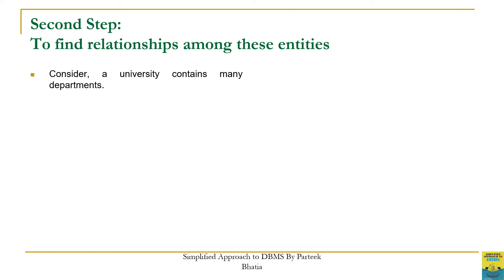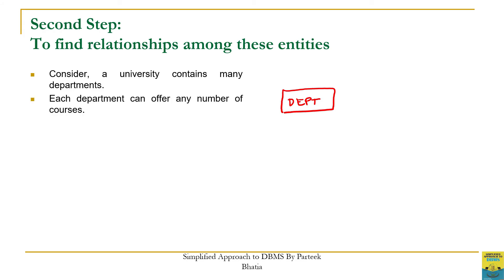Let us read the first line: 'A university contains many departments.' University has only one instance so we ignore it; the first entity is department, represented by a rectangle. The second line: 'Each department can offer any number of courses' — here we have nouns department and course, so we create another rectangle for course. The word 'offer' is a verb indicating a relationship between department and course, so we create a diamond-shaped relationship named 'offer' and attach both entity sets to it.